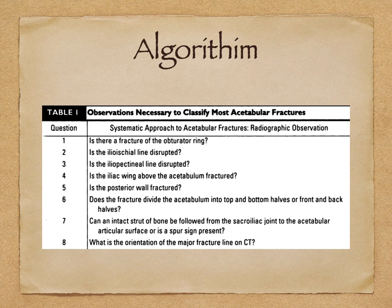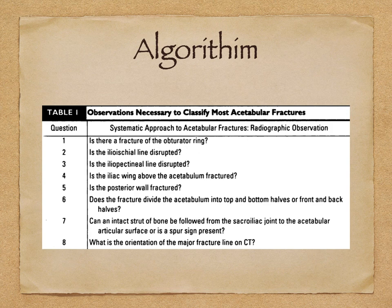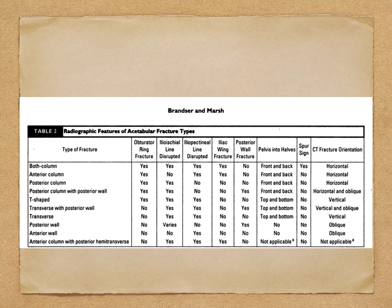To conclude, a simple algorithm given by March et al. asks eight fundamental questions: Is there a fracture of the obturator ring? Is the ilioischial line disrupted? Is the iliopectineal line disrupted? Is the iliac wing above the acetabulum fractured? Is the posterior wall fractured? Does the fracture divide the acetabulum into top and bottom halves or front and back halves? Can an intact strut of bone be followed from the sacroiliac joint to the acetabular articular surface, or is a spur sign present? And what is the orientation of the major fracture line on CT? Based on this you can easily reach a diagnosis.